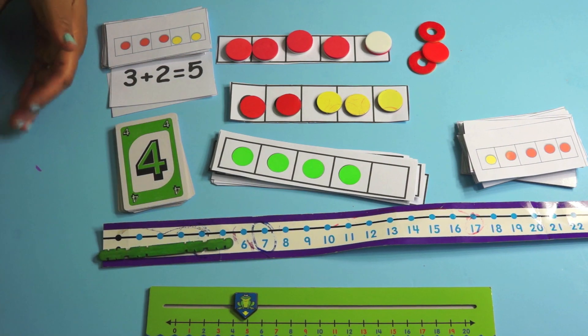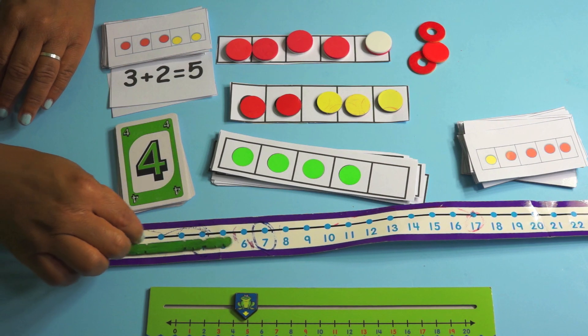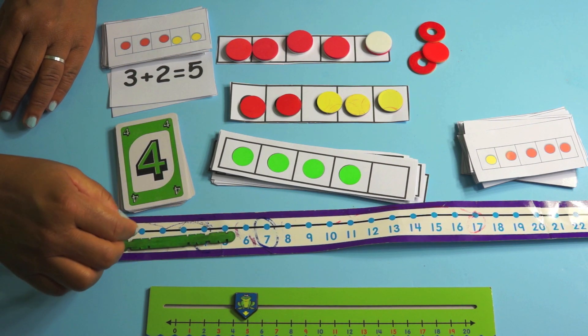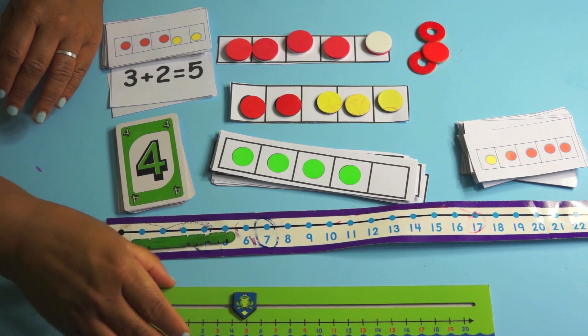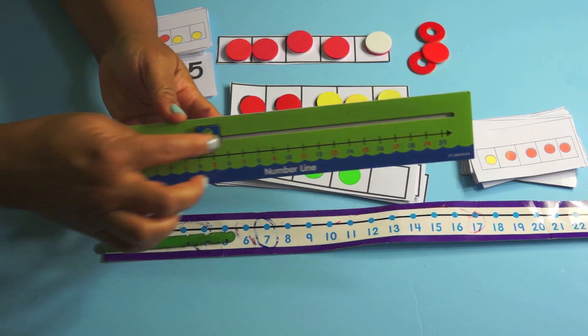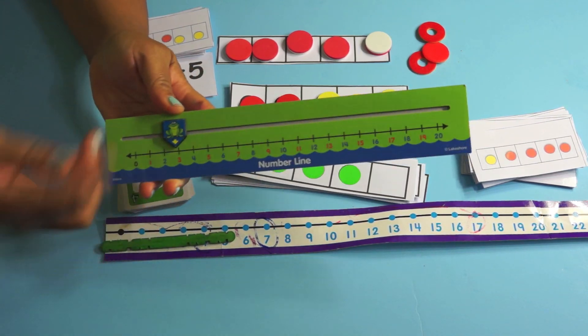You know, you can have kids make their own number lines. You can buy number lines. I like these number lines because they're laminated and you can have kids circle on them and do all kinds of things and erase. Or you can use these number lines. These are number lines from Lakeshore actually.